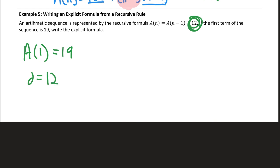So my explicit rule, or explicit formula, is going to be A of N, A parentheses N, equals, and now I start with my first term, 19 plus, and this is always N minus 1 in explicit rules, always N minus 1, times that common difference of 12. And I don't simplify that. I don't distribute. I'm okay with it being in that form.